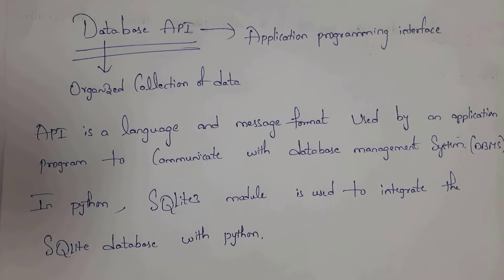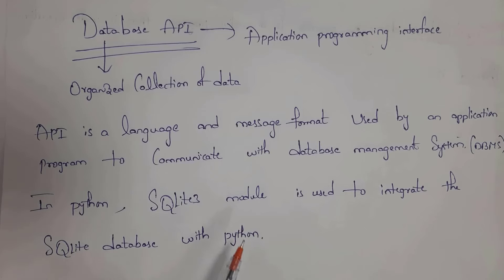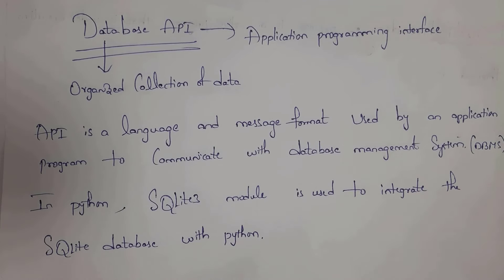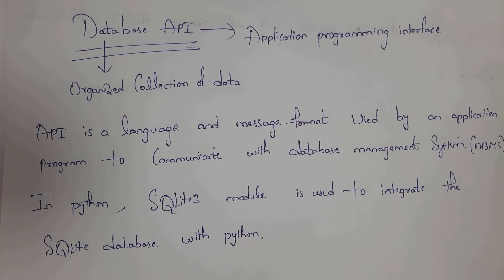In Python, we use the SQLite3 module. This SQLite3 module is nothing but an API. By using the SQLite3 module, we can establish communication between Python and the database. Database API is used to establish communication between a Python program and a database.